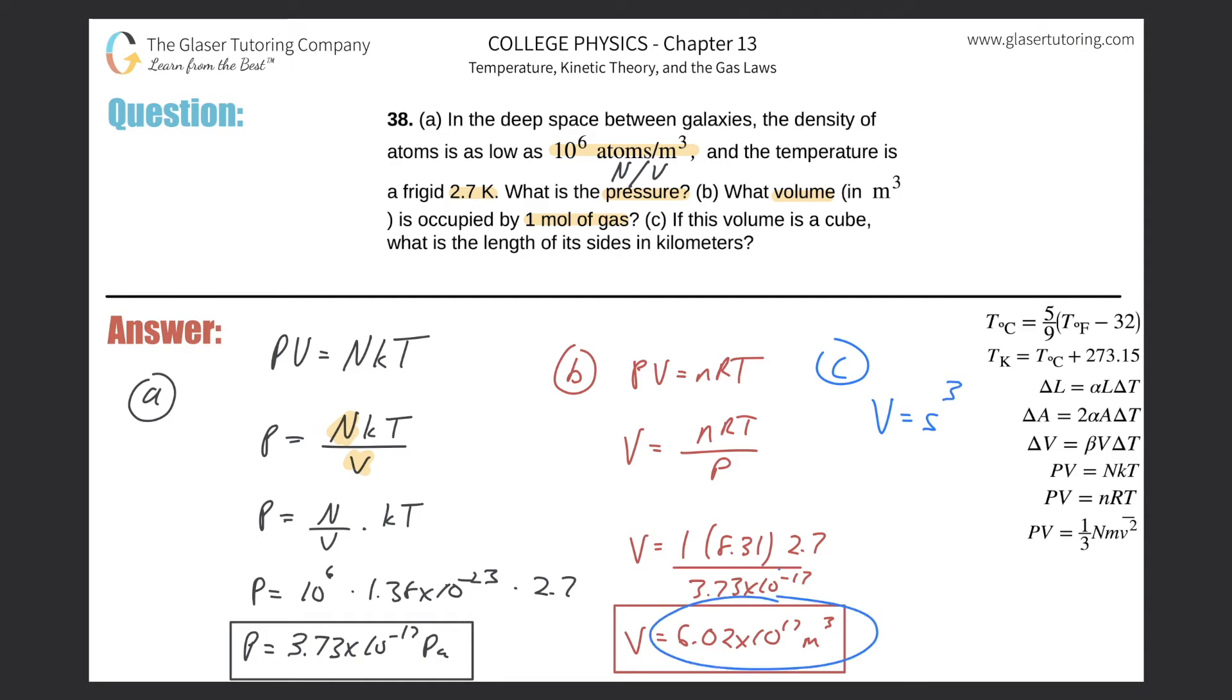So now if I take this value, right—which is the volume of 6.02 times 10 to the 17th—and I want to find then the sides, all I would have to do is take the cube root of both sides, right? So when I do that, I just have s, and then when I do it for the other side, let's see, let me throw this on into the calculator.